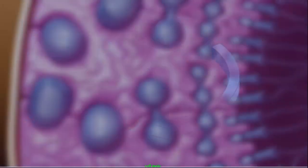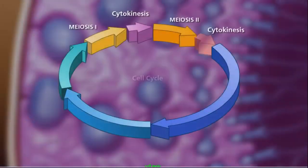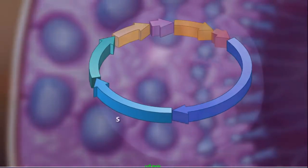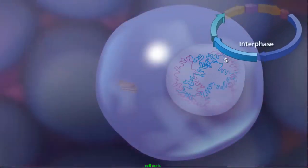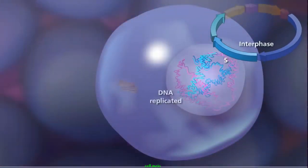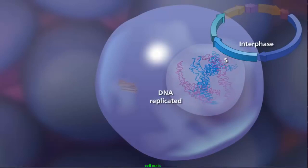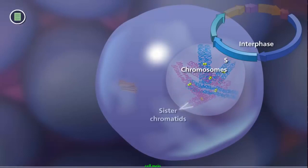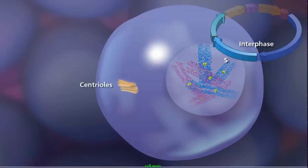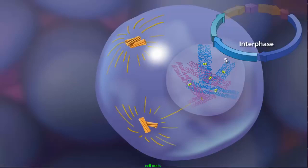As in mitosis, meiosis begins after a cell has successfully completed the G1, S, and G2 stages of interphase. During the S phase of interphase, the DNA is replicated, producing two copies of each chromosome called sister chromatids. The paired centrioles in the cytoplasm duplicate and begin extending microtubules that will form the meiotic spindle.